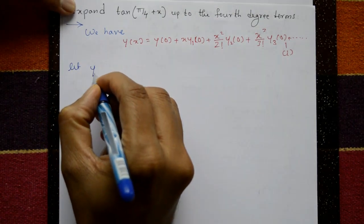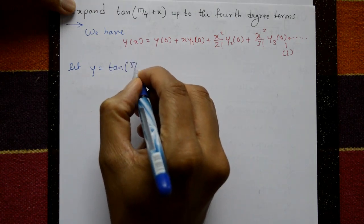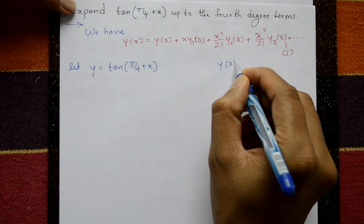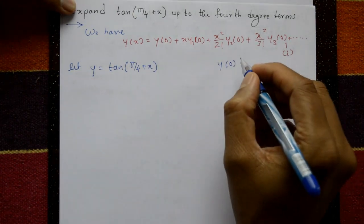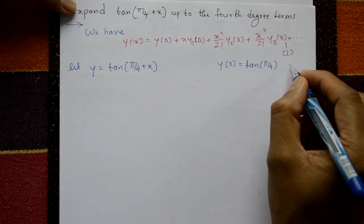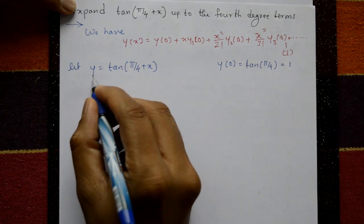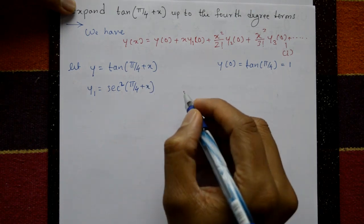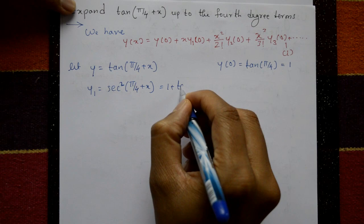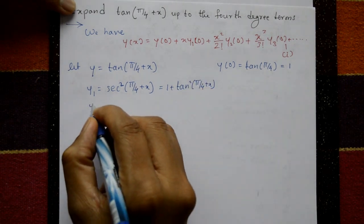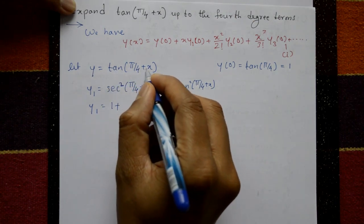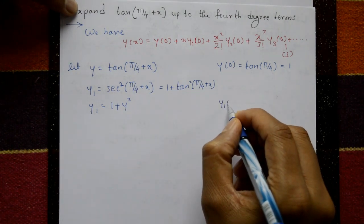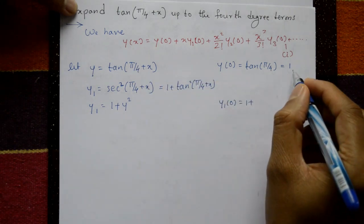Let y = tan(π/4 + x). Put x = 0: y(0) = tan(π/4) = tan 45° = 1. Differentiate: y1 = sec²(π/4 + x) = 1 + tan²(π/4 + x) = 1 + y². Put x = 0: y1(0) = 1 + y² = 1 + 1² = 2.